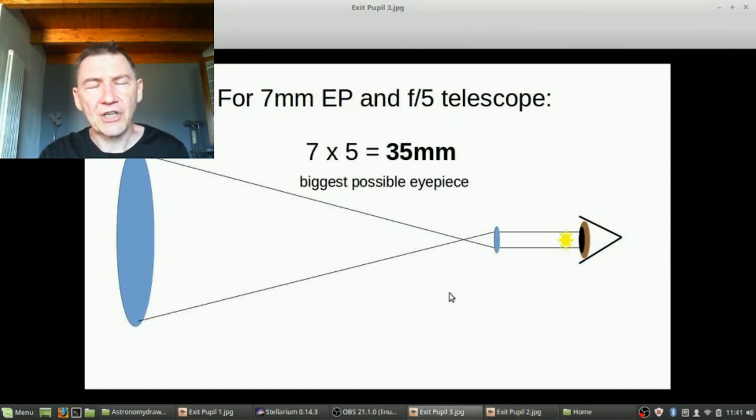And that really is a pity, because a telescope needs to deliver as much light as possible. Now, so the biggest eyepiece that we can use for a 7 mm exit pupil, and with an F5 telescope is 7 by 5 is exactly 35 mm. This is the biggest possible eyepiece. This is the biggest possible eyepiece that we can use with our F5 telescope. Otherwise, some of the light will get lost. It will not fit all into our eye.